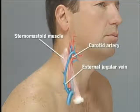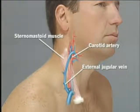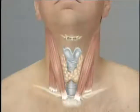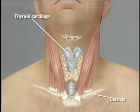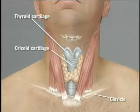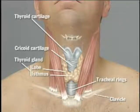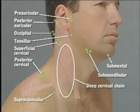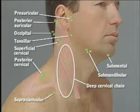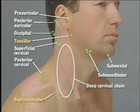Deep to the sternomastoid run the great vessels of the neck: the carotid artery and the external jugular vein, which passes diagonally over the surface of the sternomastoid. Key midline structures include the thyroid cartilage — readily identified by the notch on its superior edge — the cricoid cartilage, the tracheal rings, and the thyroid gland. The isthmus of the thyroid gland lies across the trachea below the cricoid. The overlying sternomastoid muscle largely obscures the deep cervical chain, but the tonsillar node and supraclavicular nodes may be palpable.